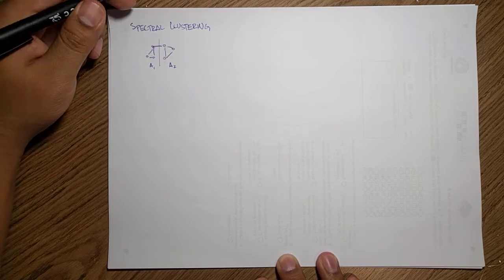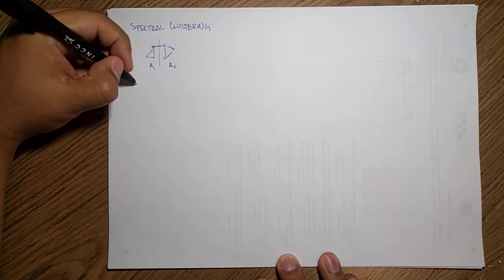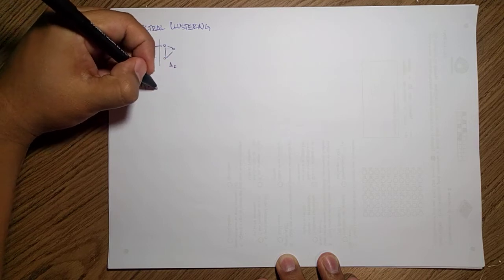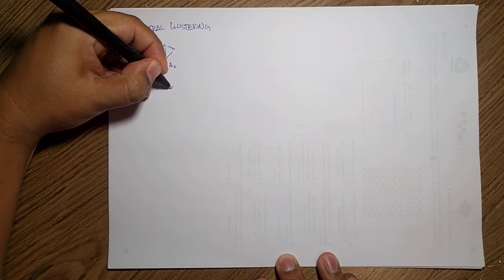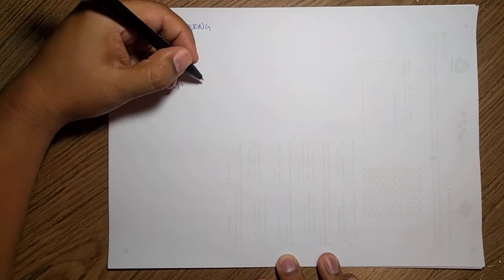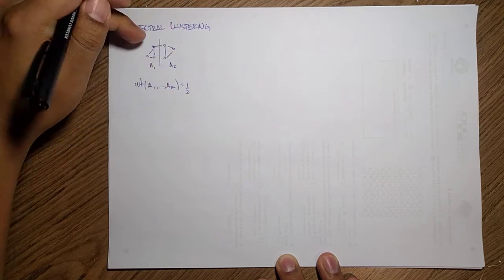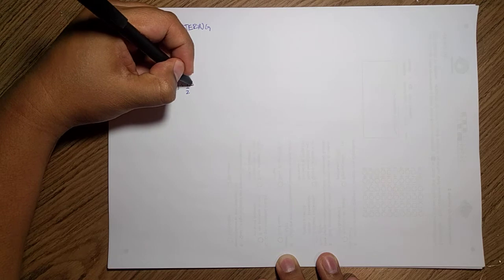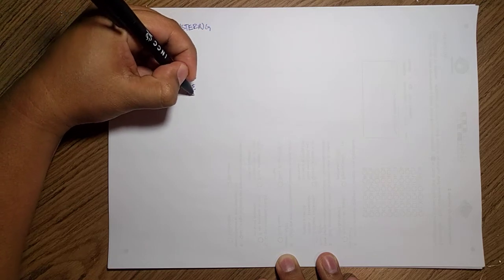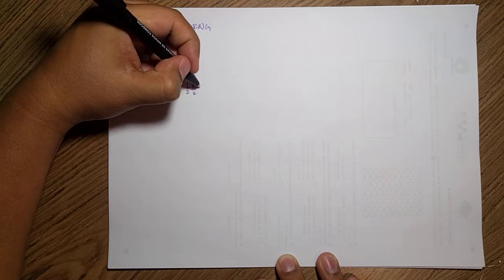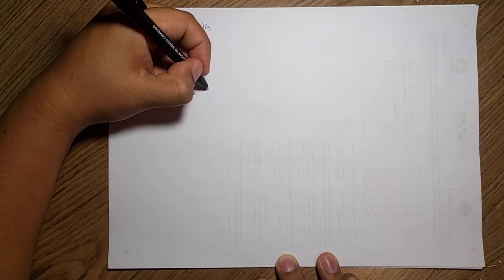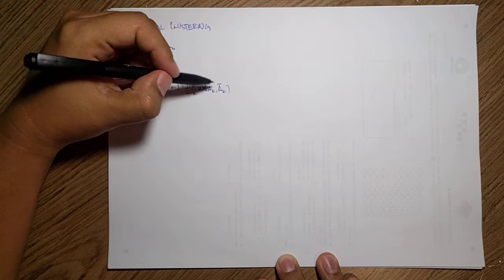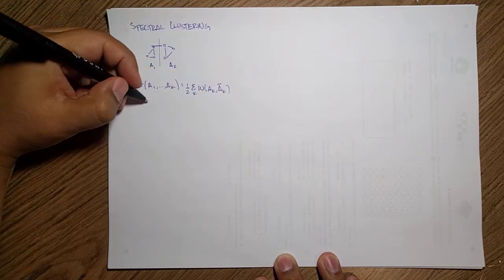We can define this as the cut between different parts, and this cut is a measure of how divided this is. This is one half of the summation of the k partitions of W(Ak) and the complement of Ak.